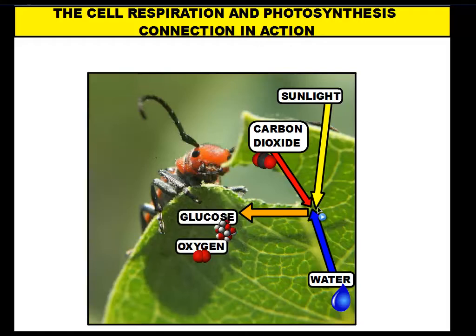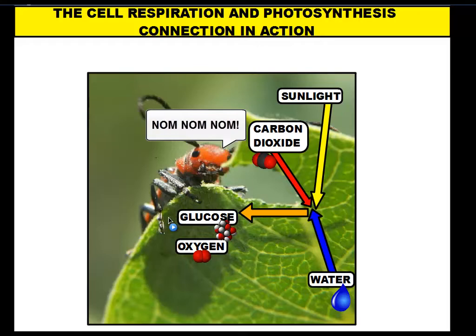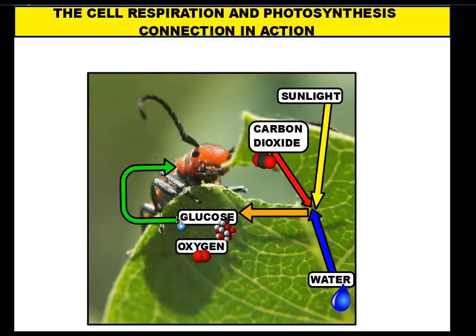The glucose that's in the leaves is going to enter the body of the ant as he's chomping away at the leaf. Every bit of leaf that he chews up, swallows, and digests, the glucose is going to enter its cells. And because it needs to breathe, it's going to take in oxygen from the atmosphere. So right now we have glucose and oxygen going into this organism.